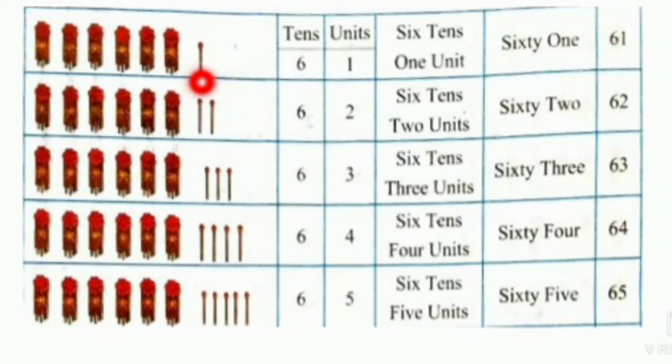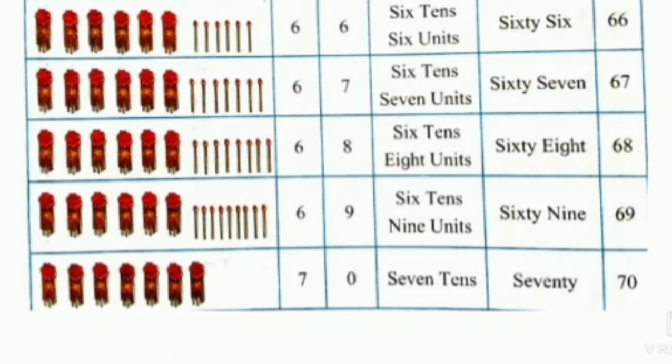Here we have 6 tens and 1 unit, 61. 6 tens, 2 units, 62. 6 tens, 3 units, 63. 6 tens, 4 units, 64. 6 tens, 5 units, 65. 6 tens, 6 units, 66. 6 tens, 7 units, 67. 6 tens, 8 units, 68. 6 tens, 9 units, 69. And again here we have 7 tens and 0 units. So 7 tens and 0 units is 70.